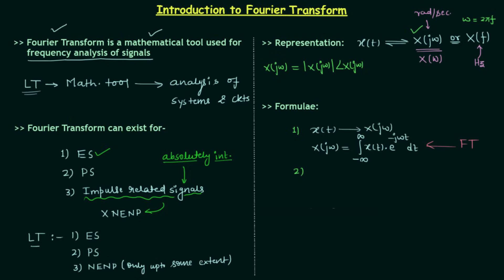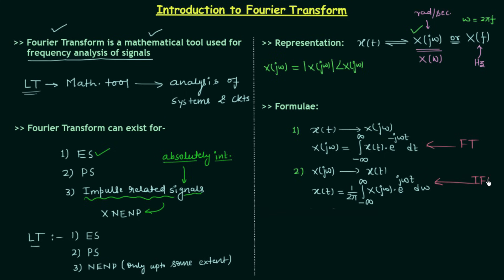The second formula transforms the frequency domain signal X(jω) back to the time domain signal x(t). The formula is: x(t) = (1/2π) integral from minus infinity to infinity of X(jω) multiplied by e^(jωt) dω. This formula is known as the inverse Fourier transform. Together the two formulas are known as the Fourier transform pair, and both formulas are valid only for absolutely integrable signals.